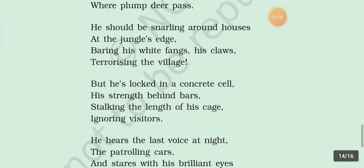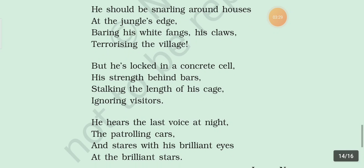'But he is locked in a concrete cell. He stands behind bars, stalking the length of his cage, ignoring the visitors.' He is again used for tiger, so the whole stanza is written in personification. In the first line, 'concrete cell' — the C sound is repeated, so alliteration is used here. In the second line, 'behind bars' — the B sound is repeated, so alliteration figure of speech is used here.